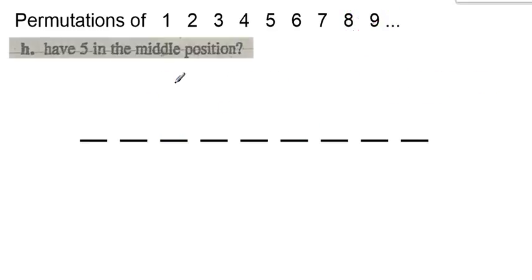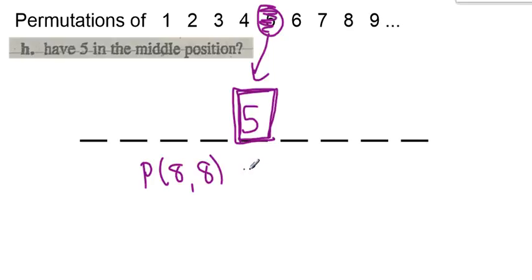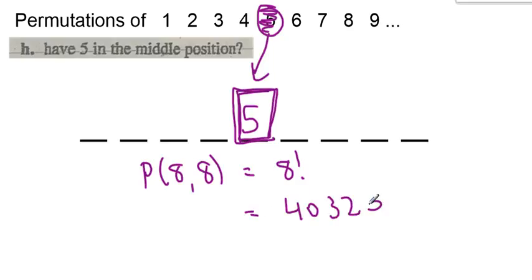How many permutations have the 5 in the middle position? Here's the middle position and the number 5 has to go there. So the 5 is not part of my math, and that middle position is not part of my math either. All I have to consider is the other eight numbers to fill the other eight positions. That's just 8 factorial, which is 40,320.